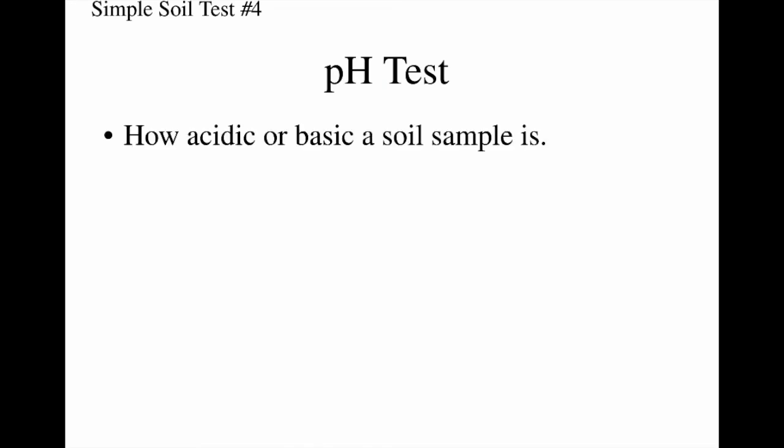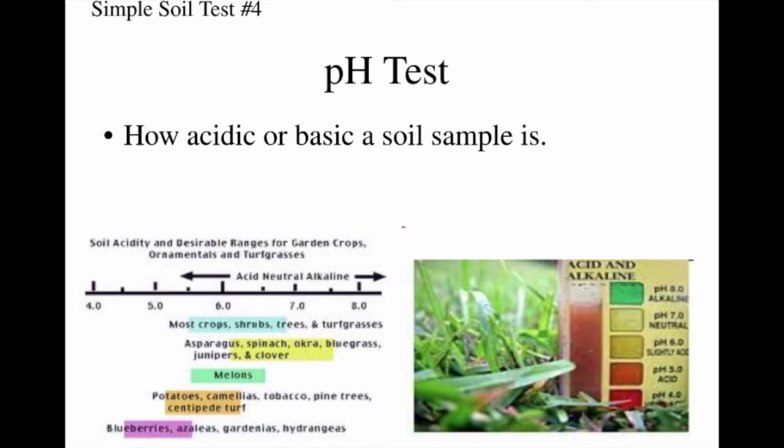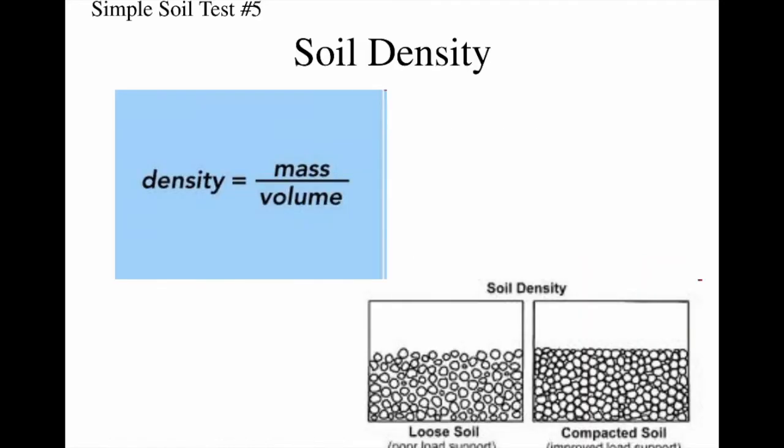Another test we can do on soil is a simple pH test — hopefully you remember this from chemistry class — where we're just looking at how acidic or basic a soil sample is. We can also check the soil's density. Density is just mass over volume, so we can look at a soil sample and see how loosely or compactly it is packed.